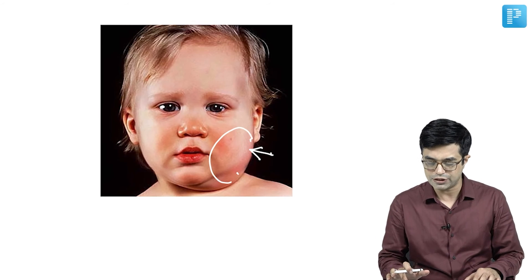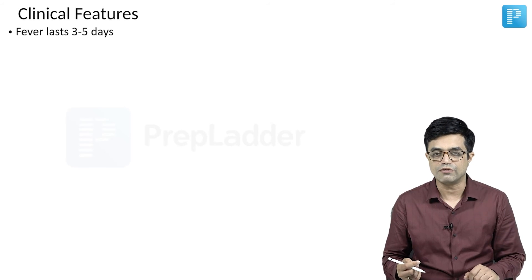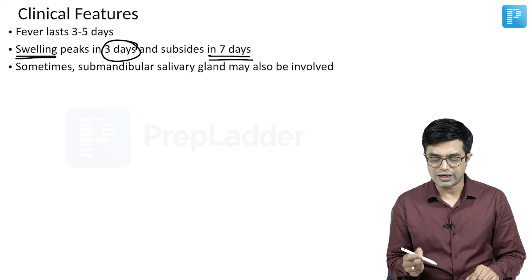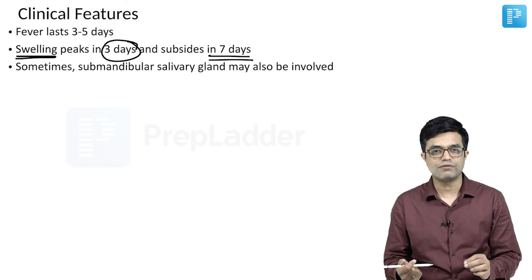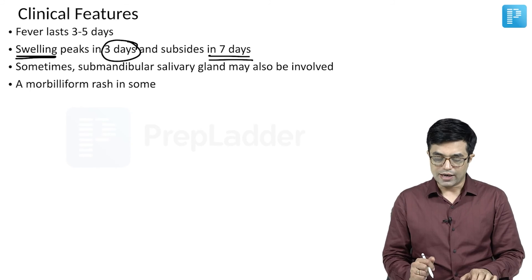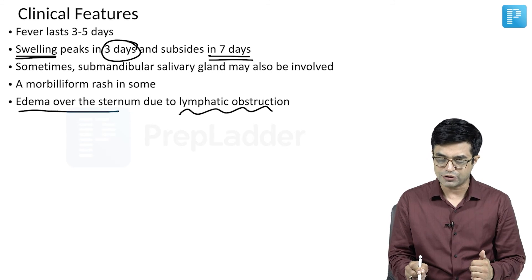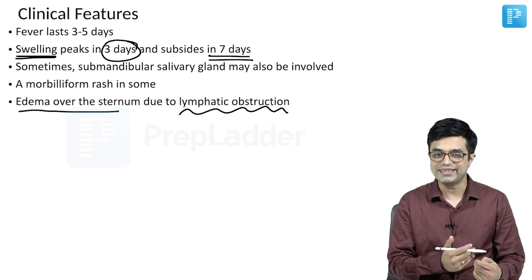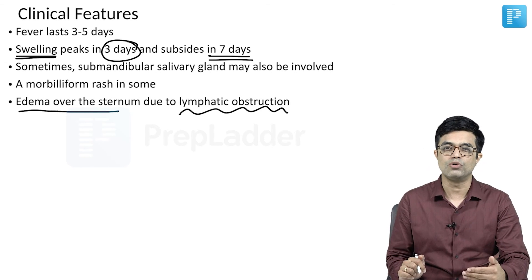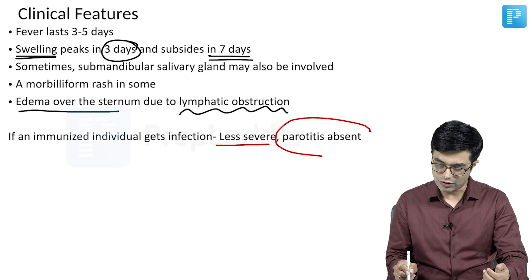This child is having features of parotitis which is unilateral. Moving further — the fever lasts about three to five days and then, without therapy, it will come down; only symptomatic management is needed. The parotid swelling peaks in about three days and subsides in seven days. Sometimes the submandibular salivary gland is also involved; Nelson actually notes that in a small subset of patients only the submandibular gland is involved without parotid involvement, though those cases are relatively rare. A maculopapular measles-like rash may be seen in some individuals, and edema may appear over the sternum due to lymphatic obstruction. If an immunized individual gets infection, the infection is usually less severe and parotitis is absent.